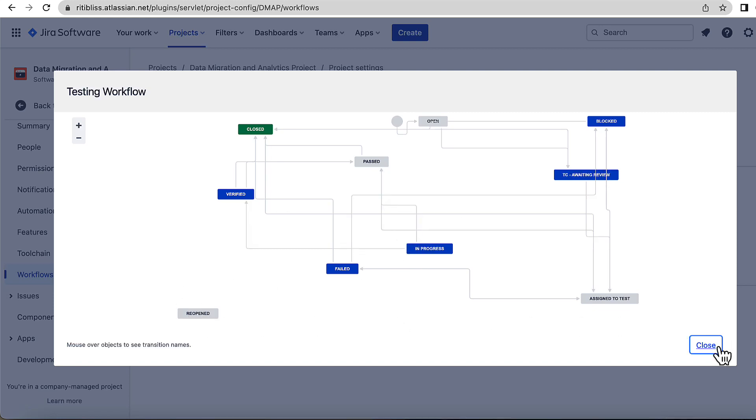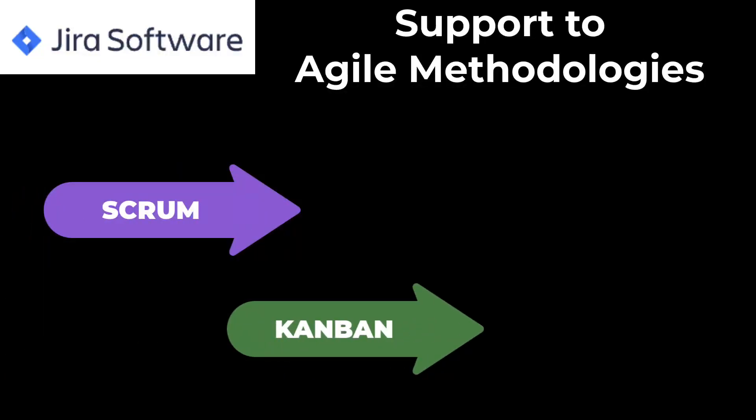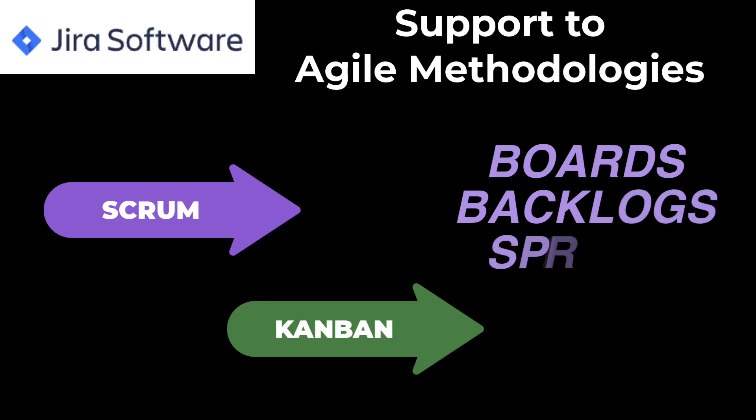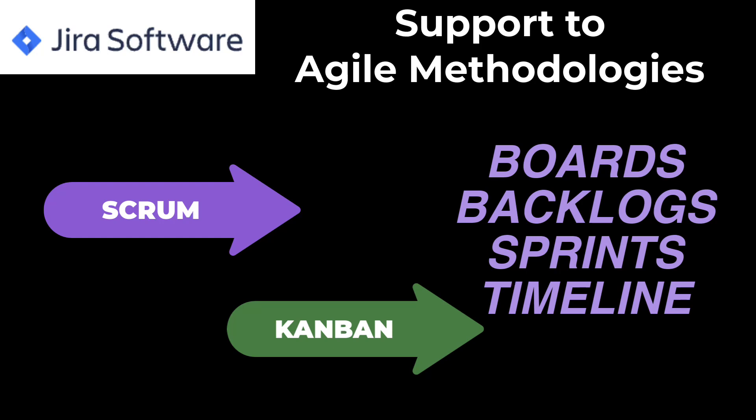The next feature is support for agile processes. Working with Jira and other tools, I found that Jira is the most adaptable and customizable project management software that offers good support for agile methodologies like Scrum and Kanban. Jira has features like Scrum and Kanban boards, backlog management, sprint management, timeline management, burndown charts, reporting, and much more.